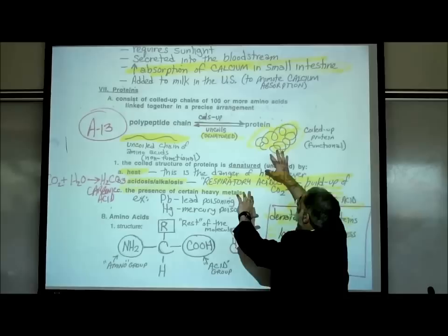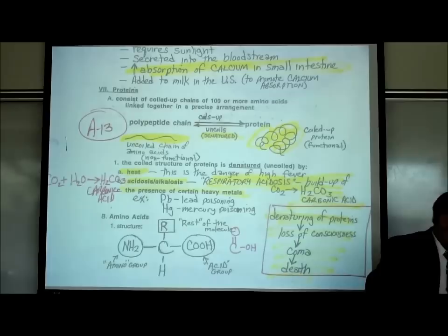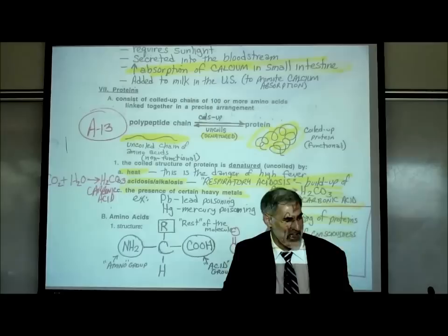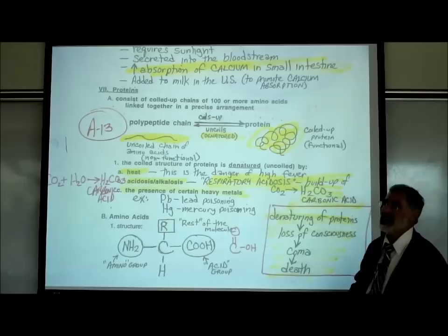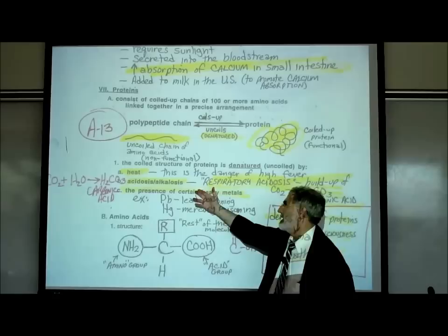Anything that would cause the protein to uncoil back into a straight polypeptide chain, we call that denaturation. It's become denatured — it no longer works. We identify three things that would cause proteins to become denatured.